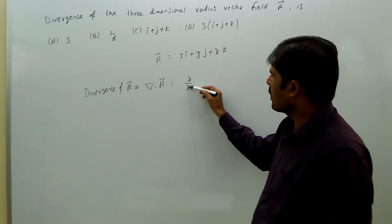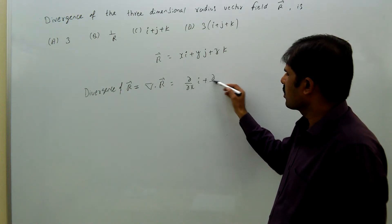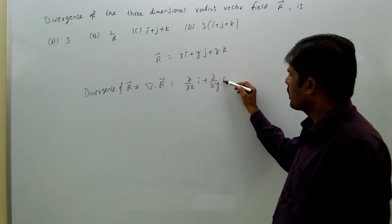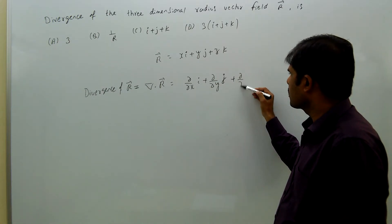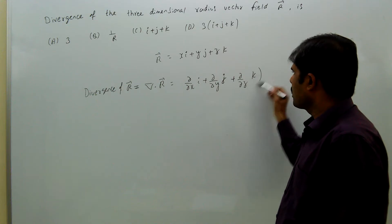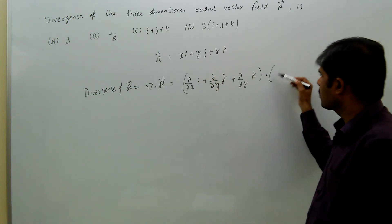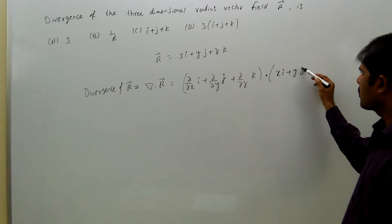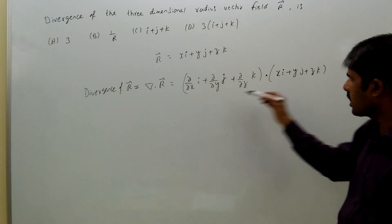That is equal to del by del x i plus del by del y j plus del by del z k, dot R means xi plus yj plus zk.